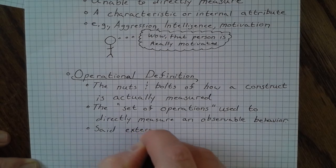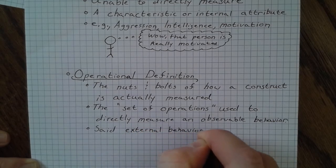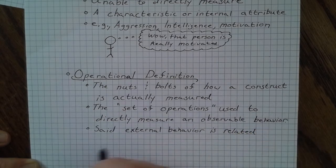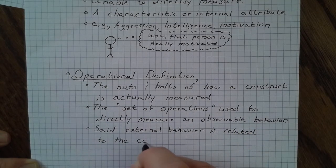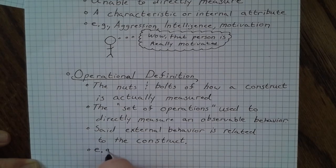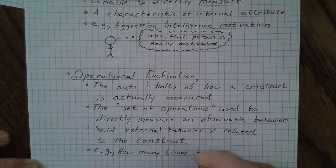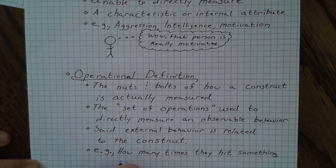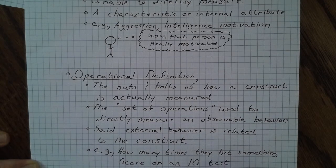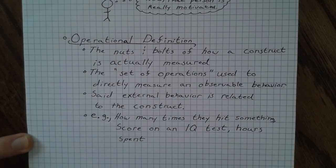Presumably this external behavior is somehow related to your construct of interest, or is caused by that construct. For example, if we're talking about aggression, how many times an individual hit another person would be an operational definition of aggression. If we're talking about intelligence, maybe it's a score on an IQ test. If we're talking about motivation for a student, perhaps it's the number of hours they spend studying for a test.